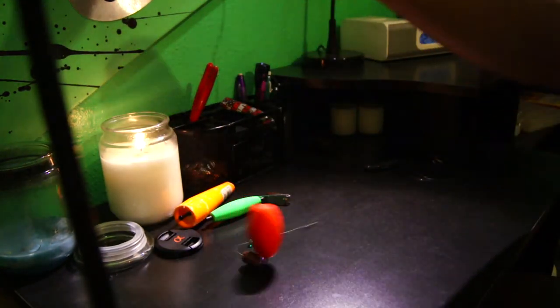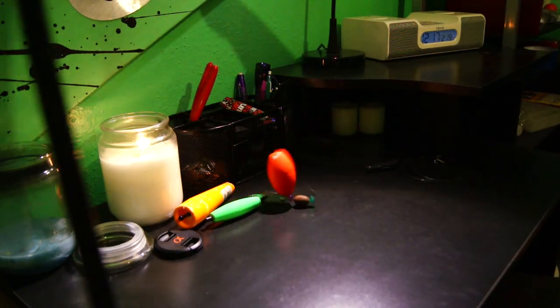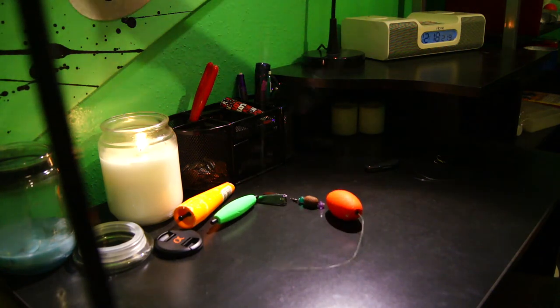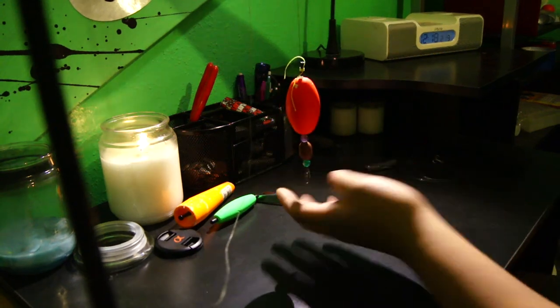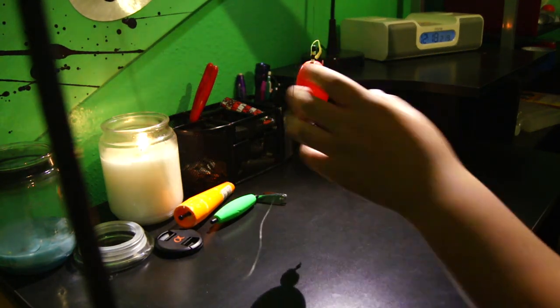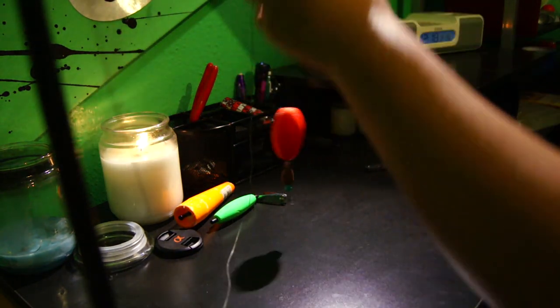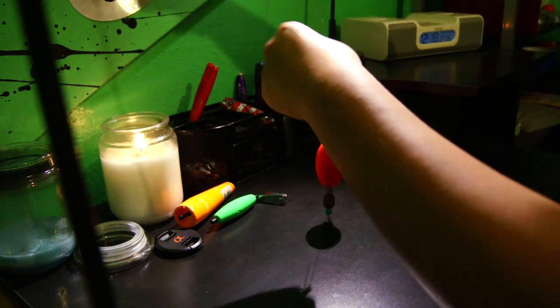So after all this is done, it should look like this. Here's the finishing thing. This is a slip cork rig. Look. Slides up and down wherever it wants.